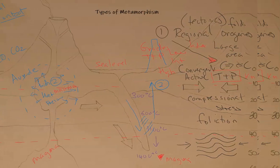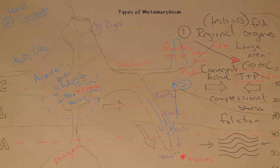Type Three is dynamic metamorphism. This is also a local type. Dynamic metamorphism is associated with fault lines, where the area around the fault undergoes pressure and temperature through stress and movement to create metamorphic rock. You might have fault lines in subduction zones, or fold and thrust faults within the mountain itself — like in the Himalayas with the Nepal earthquake.